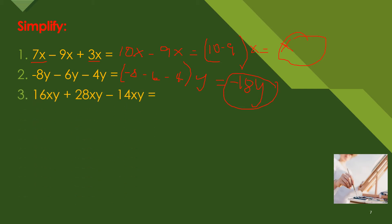Here we combine first the 16 and 28. So 16 plus 28, 6 plus 8 equals 14, so we get 44. So 44 minus 14xy. Since we have xy as a variable, so 44 minus 14, 4 minus 4 is 0, 4 minus 1 is 3, so we have 30xy as our sum.